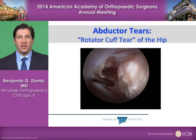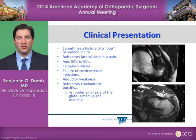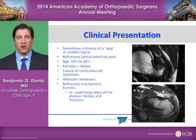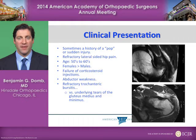Gluteus medius tears, or abductor tears, have been dubbed the rotator cuff tear of the hip. The clinical presentation may sometimes be a pop or a sudden injury, but more commonly is a refractory lateral-sided hip pain. It's most common in people in their 50s or 60s, and much more common in females than in males. Most commonly, patients will fail a series of corticosteroid injections by the time they've reached an orthopedic surgeon. One of the heralds of this problem is abductor weakness. One would think that trochanteric bursitis alone would not be a competent cause of abductor weakness, and that finding on clinical exam may suggest a gluteus medius tear.